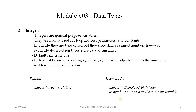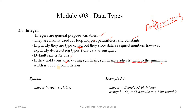The integer data type represents general purpose variables mainly used in for loops and as parameters or constant values. Implicitly they are of register type, but they store data as a signed number, whereas explicitly declared reg types store data as unsigned. The default size of an integer is 32 bits. During synthesis, if an integer holds a constant value, the synthesizer adjusts it to the minimum width needed at compilation.